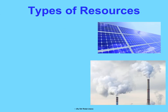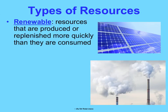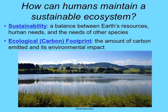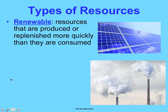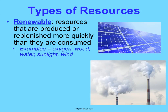There are two types of resources in terms of what Earth has and what we're using. First are renewable resources. These are resources that are produced or replenished more quickly than they are consumed. This is stuff like oxygen, wood, water currently, sunlight, and wind. We're using it and we're able to replace it faster than we're using it, so we're not running out of it.